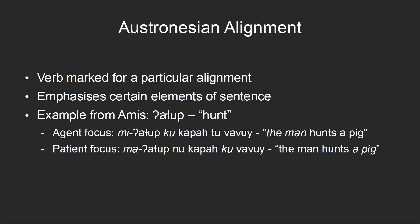We can add the agent-focused prefix to the verb to create a sentence meaning 'the man hunts the pig,' with the emphasis on the man. Alternatively, we can add the patient-focus 'ma-' prefix to create a sentence meaning the same thing but placing the emphasis on the pig — something like 'a pig is what the man hunts.' Notice that in each of these sentences, the element that is being emphasized gets the same particle 'cu' before it, regardless of whether it is the agent or the patient.